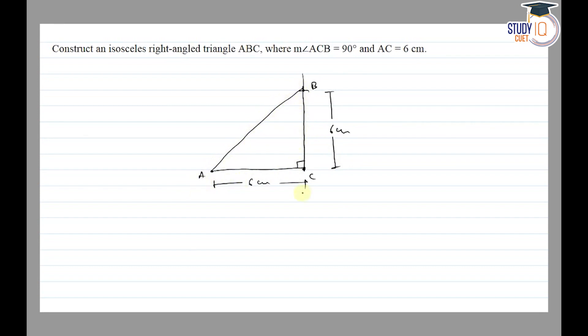So here, ABC is the required isosceles right-angled triangle. Angle C equals 90 degrees, and AC equals BC equals 6 centimeters. Thank you.